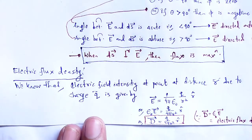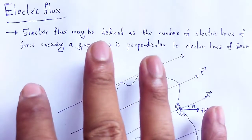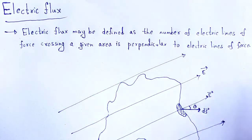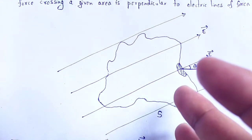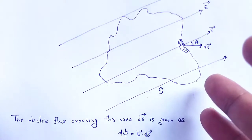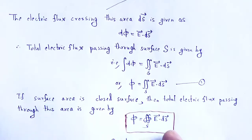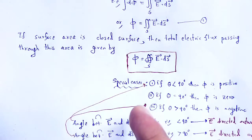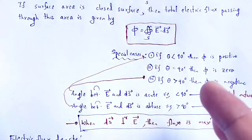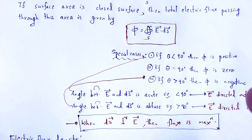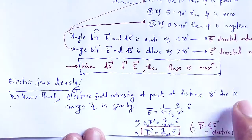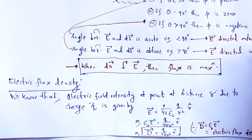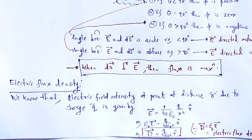So with the help of this video lecture, we understand what electric flux is. Electric flux is a scalar quantity — it is simply a number. Mathematically, we derived how to calculate the electric flux throughout a closed surface, the various special cases at what conditions the electric flux is maximum or minimum, and finally the definition of electric flux density. With these useful and intuitive notes, let me wind up this session. Thank you.